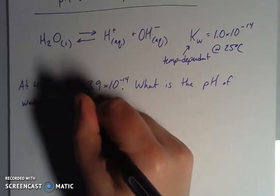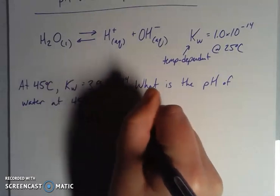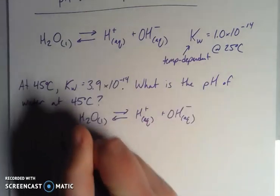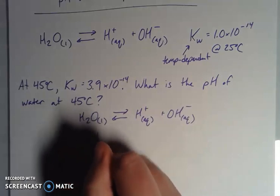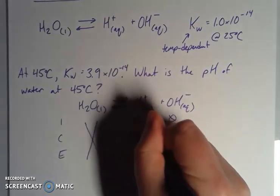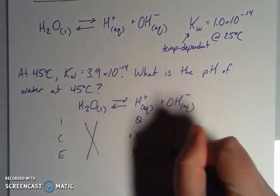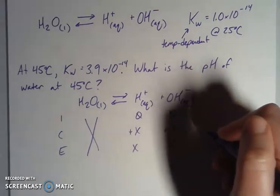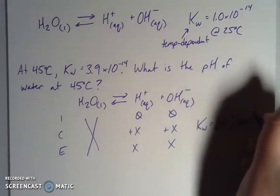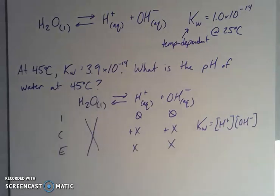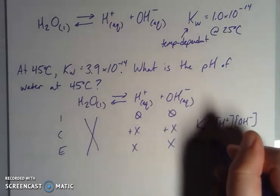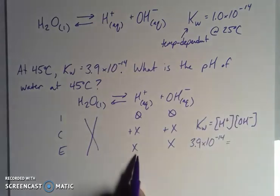So if we think about our ICE box for this equilibrium, we're going to ignore the pure water because it is a pure substance. So our initial concentrations of these guys, let's call that zero. We're going to go up by plus X for each of those. So X and X. So when we plug these in, our Kw for water here is equal to the concentration of my hydrogen times the concentration of my hydroxide. And I'm not going to include my water again because it's a pure substance.